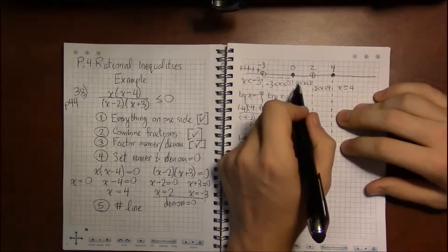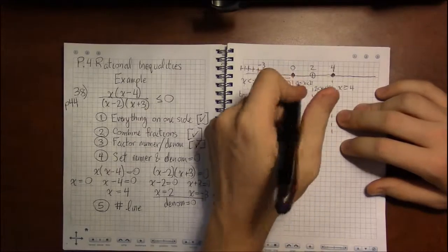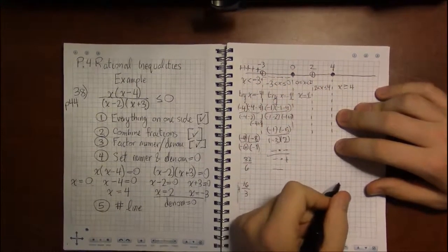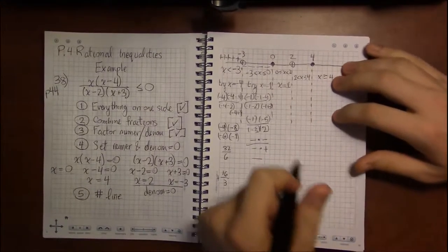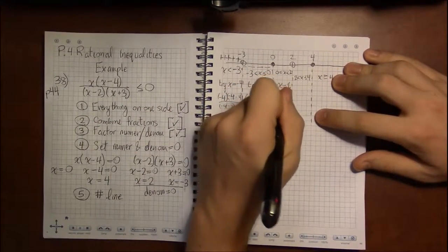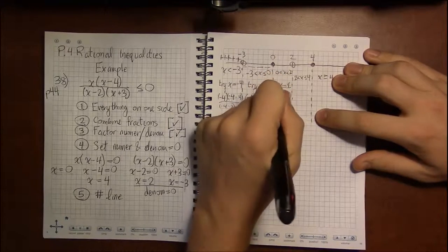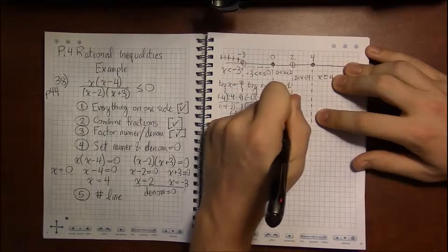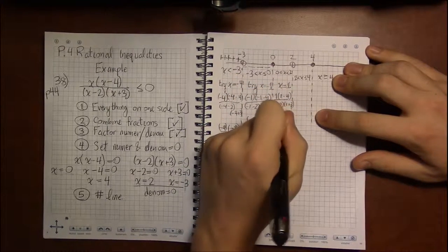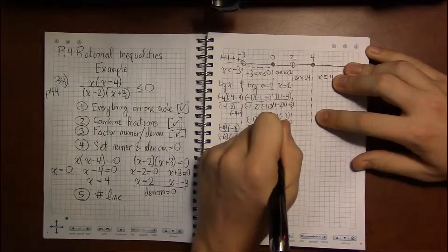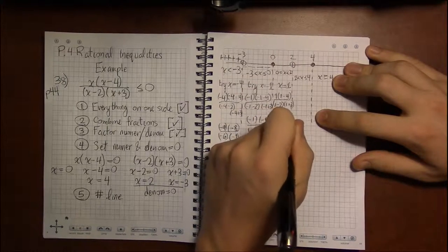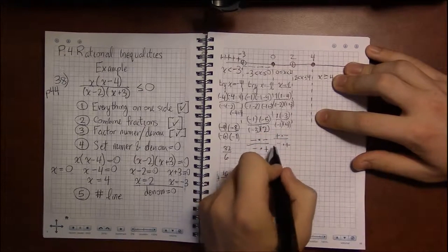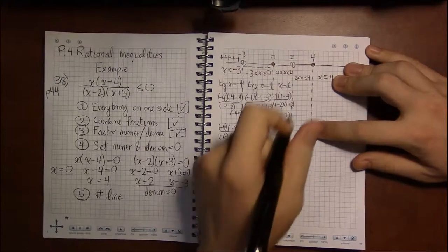Between 0 and 2. We can't pick 0, and we can't pick 2, so the only nice thing is trying x equals 1. So, if we plug 1 in, that's 1 times 1, minus 4, over 1, minus 2, times 1, plus 3, and that is 1 times minus 3, over minus 1, times 4, that's positive, times negative, over negative, times positive. 2 negatives, make a positive.